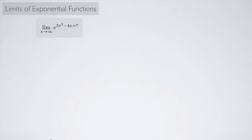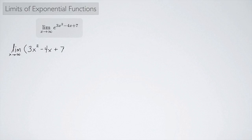We can use this to solve some limits. For example, the limit as x approaches infinity of e to the quantity 3x squared minus 4x plus 7. To solve a limit like this, it helps to look at what's going on in the exponent — we look at the limit as x approaches infinity of 3x squared minus 4x plus 7. This is an upward-opening parabola, so as x approaches infinity, this exponent also approaches infinity.